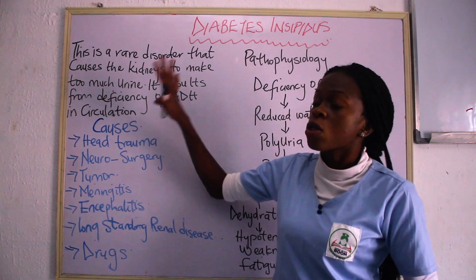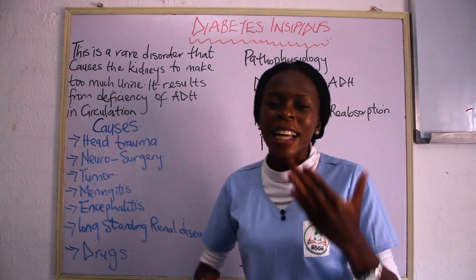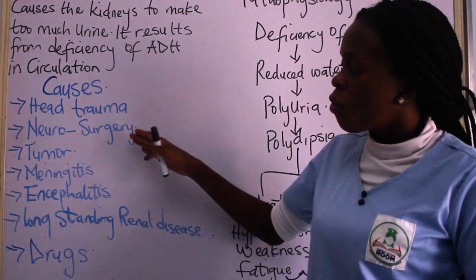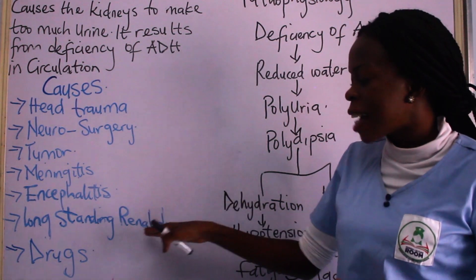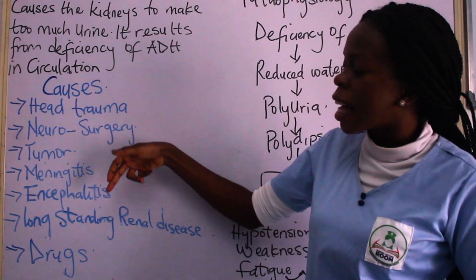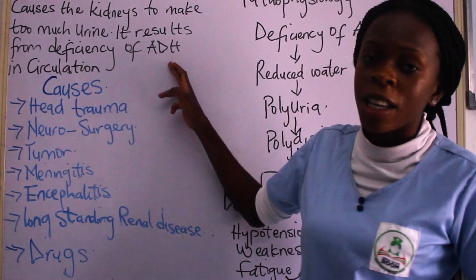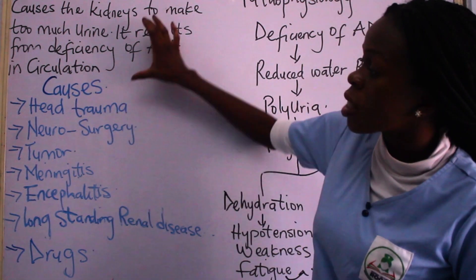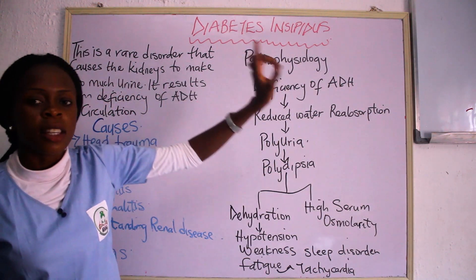The major cause of diabetes insipidus is ADH deficiency. Predisposing factors that bring about this deficiency include: head trauma, neurosurgery, tumor, meningitis, encephalitis, long-standing renal disease, and drugs. Meningitis and encephalitis are infections that are likely to hinder the production of ADH. Same with head trauma, neurosurgery, and tumor. If you look at it, the major causes of this deficiency are relating to the brain, which takes us to the pathophysiology of diabetes insipidus.